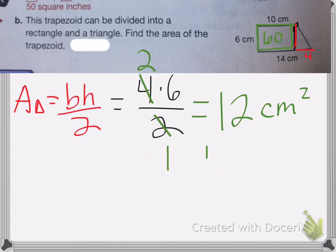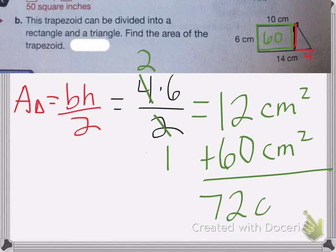So I'm going to add that 12 centimeters to the 60 centimeters I already have. So the total area is 72 centimeters squared. Okay, and that's all. Good luck on your homework.